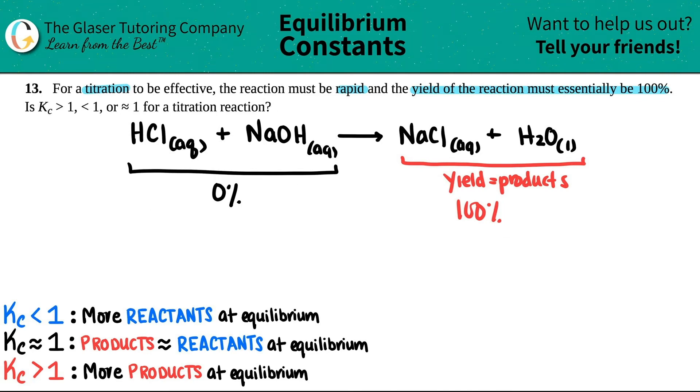So now, if I come down here, if I am favoring the product side, in this case I am way favoring the product side, I want almost 100%. That means that the Kc for this equation, the equilibrium constant, has to be greater than 1.